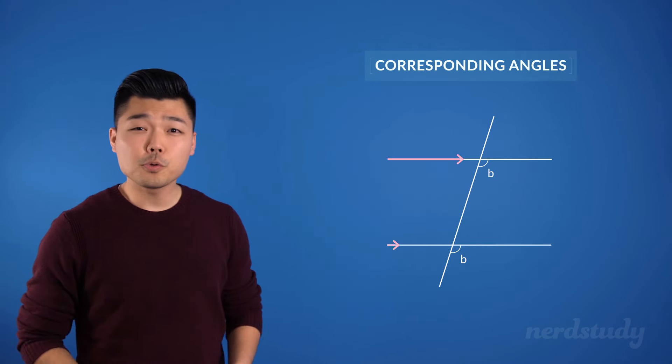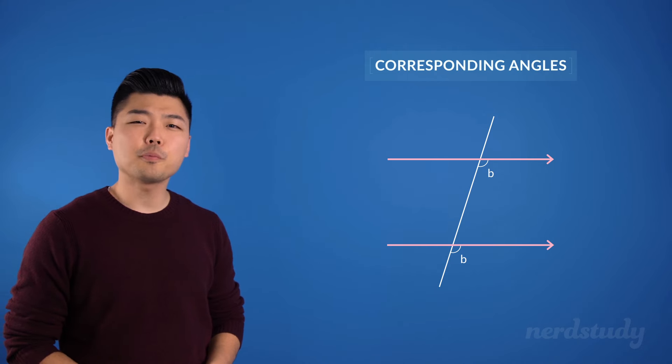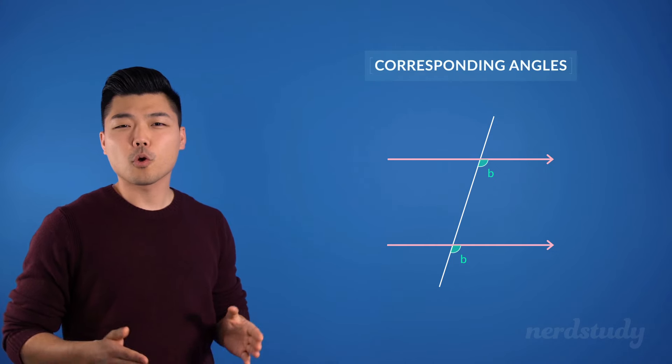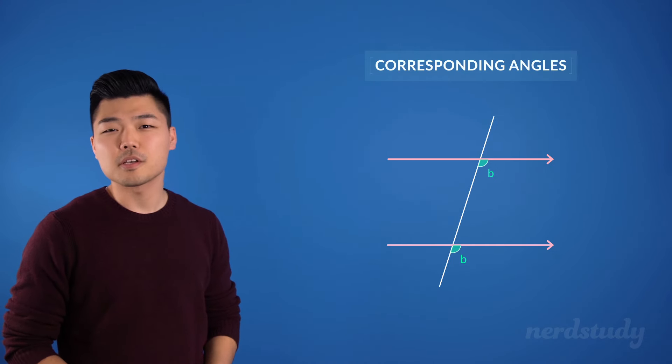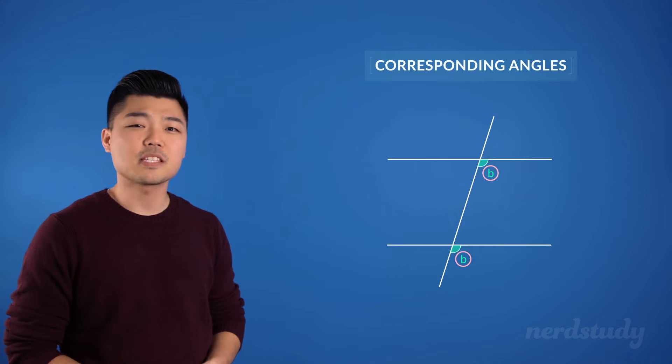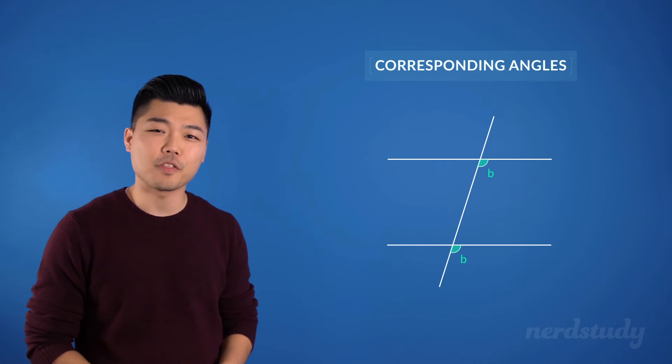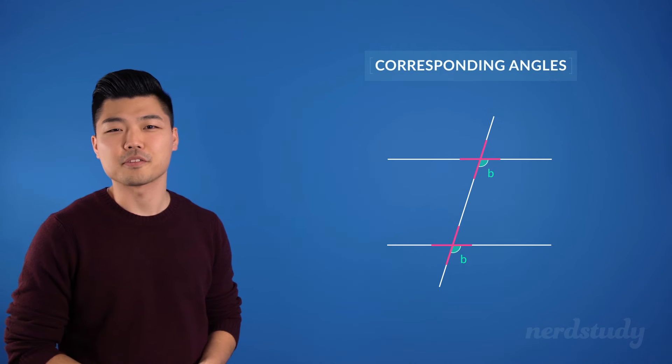Since these two lines are parallel, you'll be able to guarantee that these two angles are equal. These are called corresponding angles, since these angles occupy the same relative position at each intersection, where the straight line crosses the parallel lines.